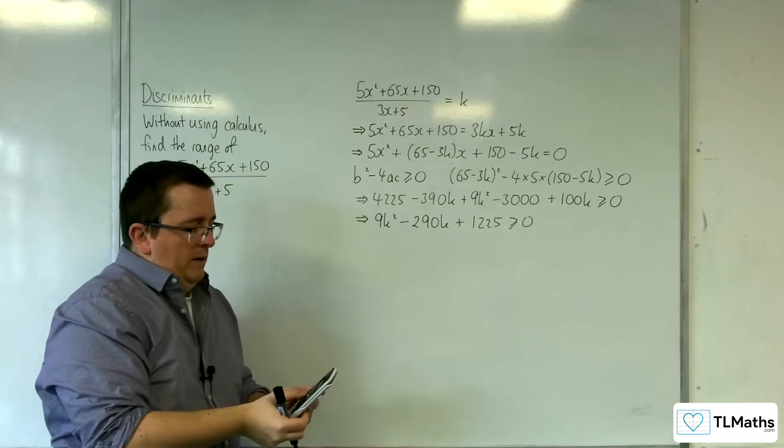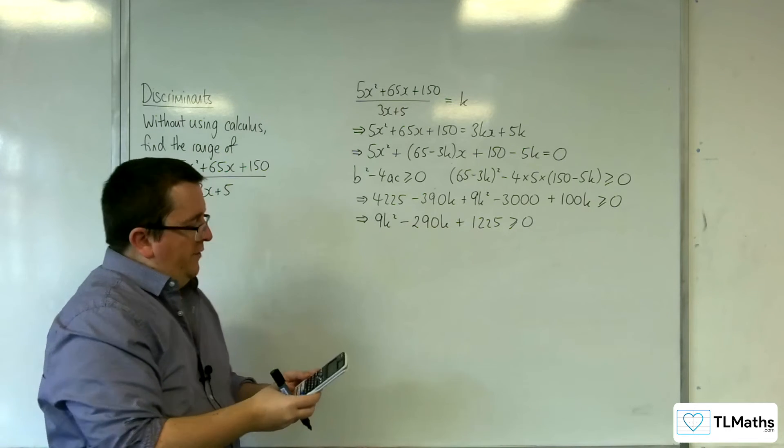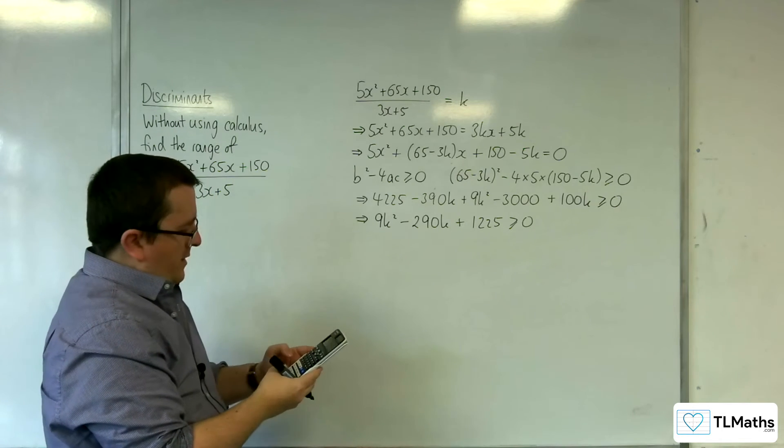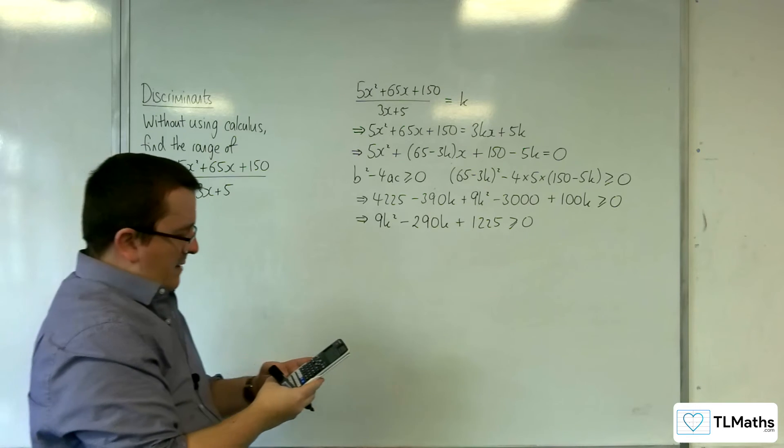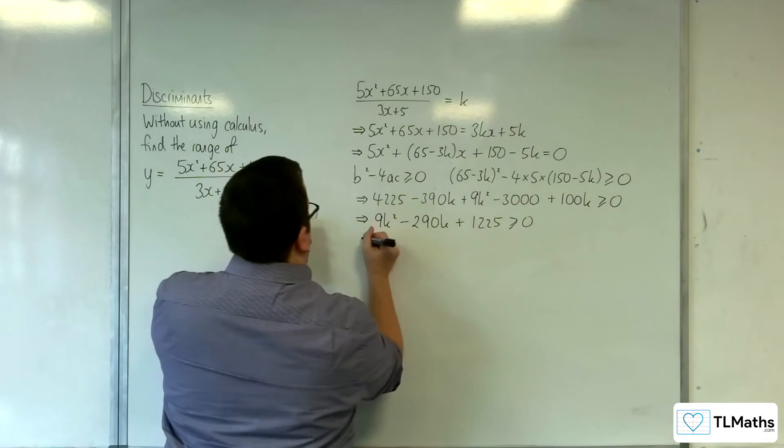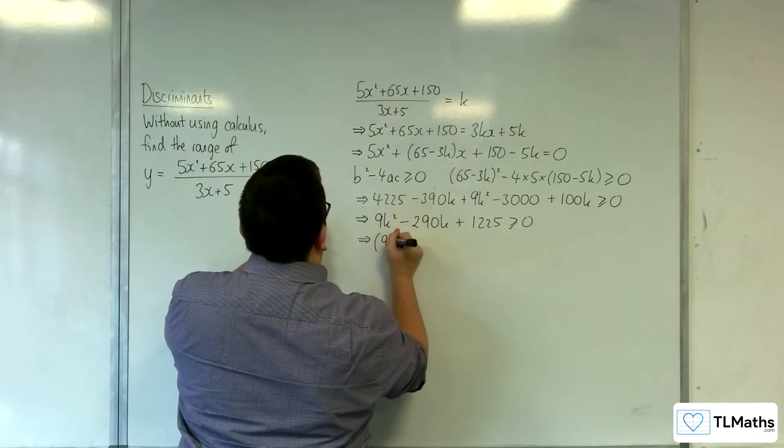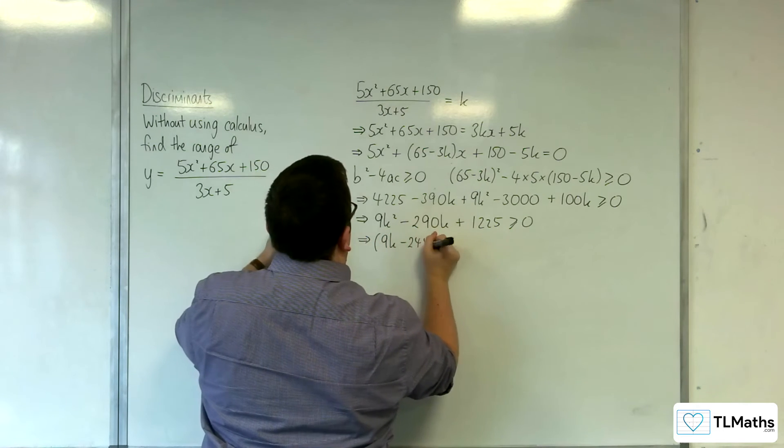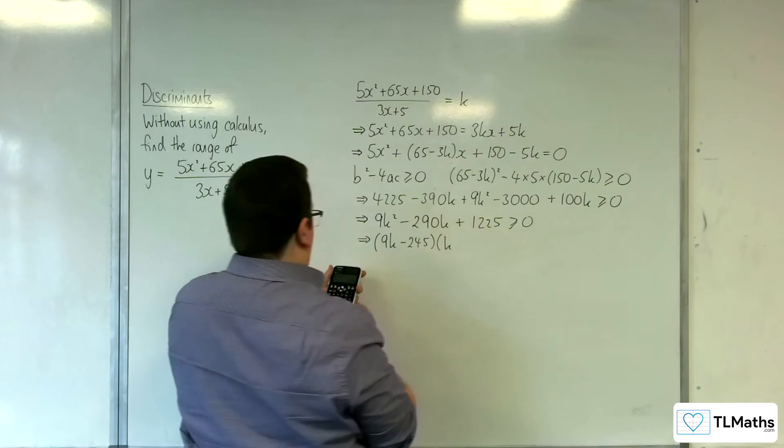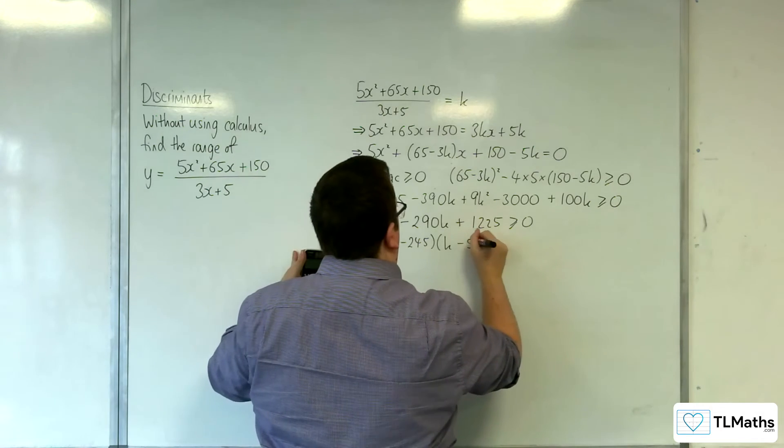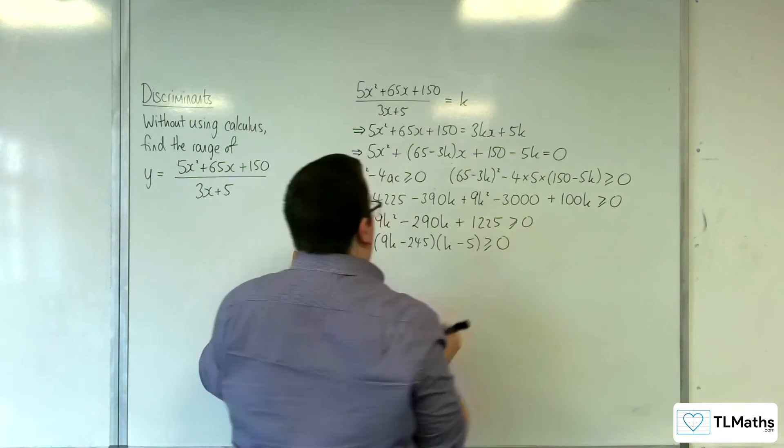Right, now I'm going to pop that into my quadratic solver to factorize it. So 9k squared minus 290k plus 1,225, so we're getting 9k take away 245, and k minus 5 is greater than or equal to 0.